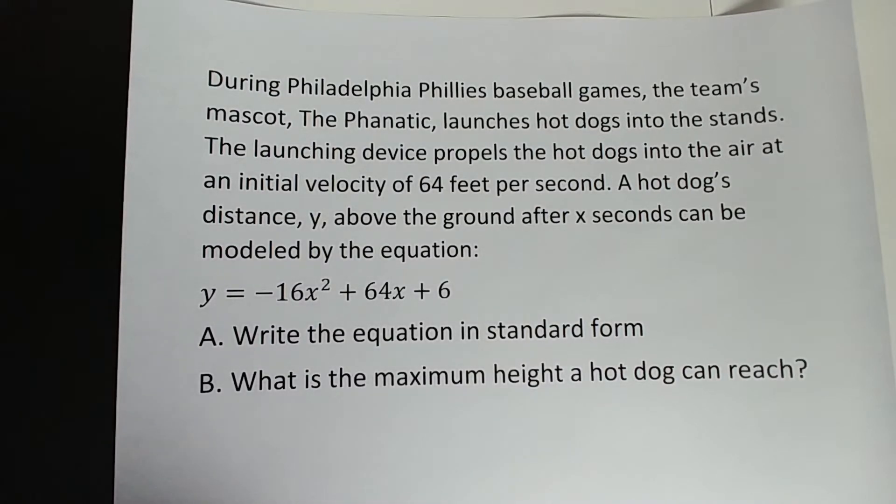During a Philadelphia Phillies baseball game, the team's mascot, the fanatic, launches hot dogs into the stands. The launching device propels the hot dogs into the air at an initial velocity of 64 feet per second. A hot dog's distance, y, above the ground after x seconds can be modeled by the equation y equals negative 16x squared plus 64x plus 6. And then it wants us to write that equation in standard form and then it asks what's the maximum height a hot dog can reach.